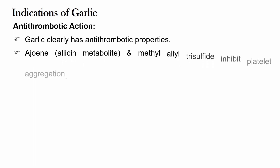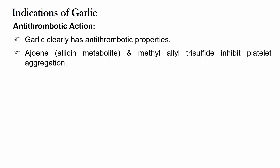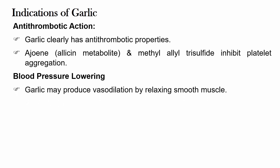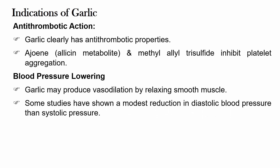The indications of garlic: Garlic has anti-thrombic properties. Ajoene and allicin metabolites and methyl allyl trisulphide inhibit platelet aggregation. Garlic has also shown blood pressure lowering properties. Garlic may produce vasodilation by relaxing smooth muscle. Some studies have shown a modest reduction in diastolic blood pressure rather than systolic pressure.